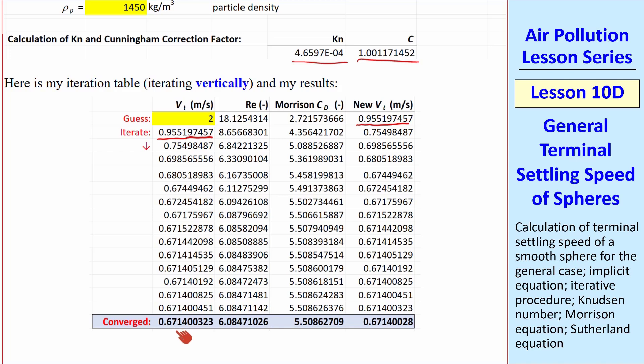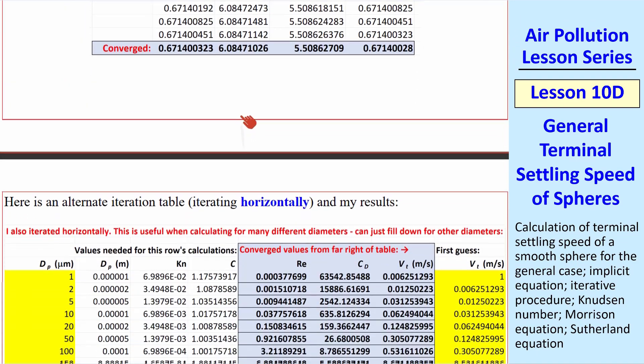I did several extra iterations until I get my final converged answer to about 7 digits. In this example, I iterate vertically with a new guess in each new row. I just want to point out